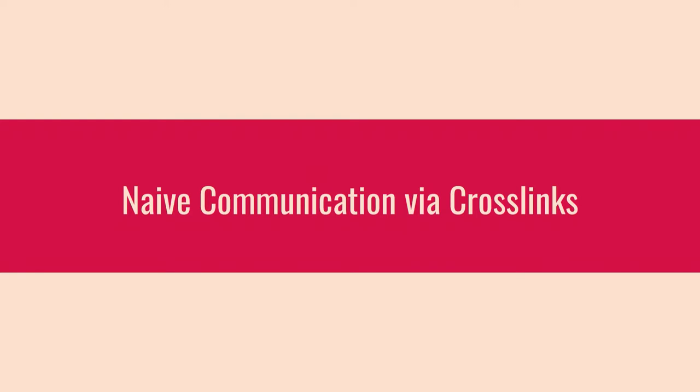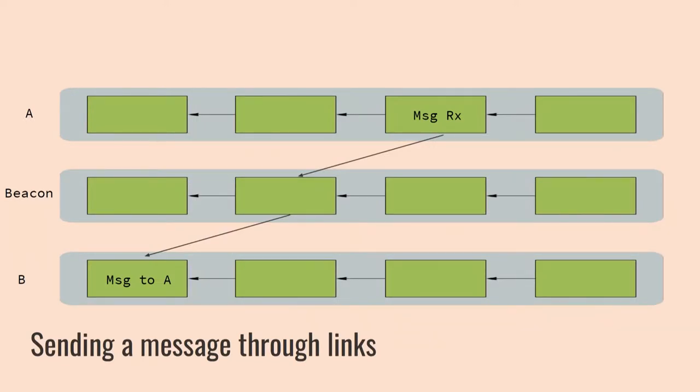ETH2 has this concept called cross-links. Every finality period, which is on the order of six minutes in ETH2, the beacon chain, which is at the center of everything, references all of the other shards. So the beacon chain includes a cross-link to a thousand other shards. And each shard, every six minutes or so, includes a cross-link to the beacon chain.